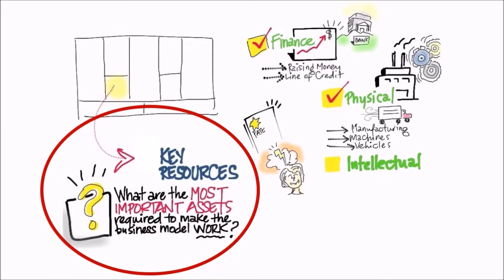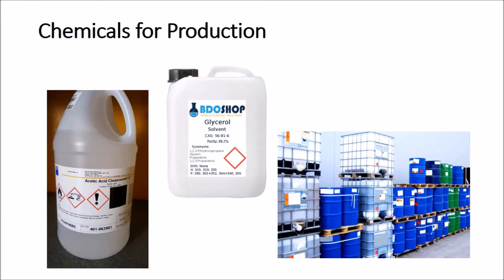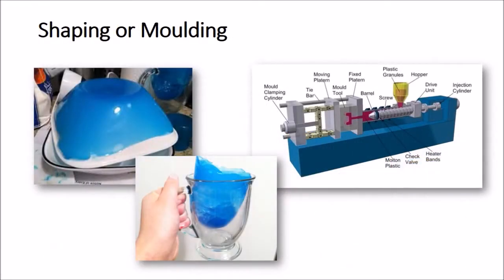Moving forward to our key resources of the business model canvas. There are three main parts. The first is biodegradable waste material, with examples including shrimp shells, banana peels and sugarcane waste. These three types of waste material are commonly found in Malaysia. The second key resource is chemicals for production — specifically acid and glycerol, which are important for the production of bioplastic. The last one is the shaping or molding part.